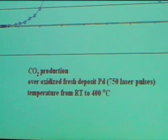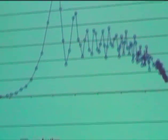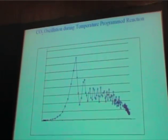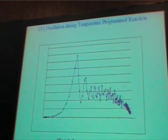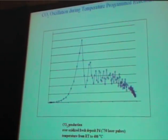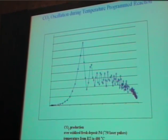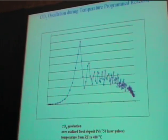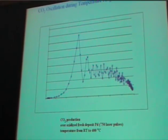So the first experiment we did, and I apologize, looks like my friend Bill Gates will not allow me to label my axes since I did this on a Mac, but in any case, this is CO oscillation during temperature programmed reaction. So the y-axis is CO conversion, and the x-axis is temperature. And the temperature goes from room temperature on the left all the way to 400 degrees Celsius on the right.